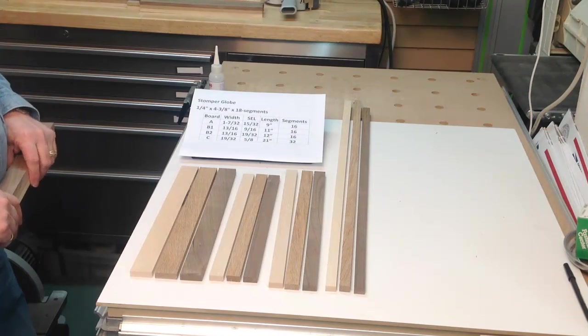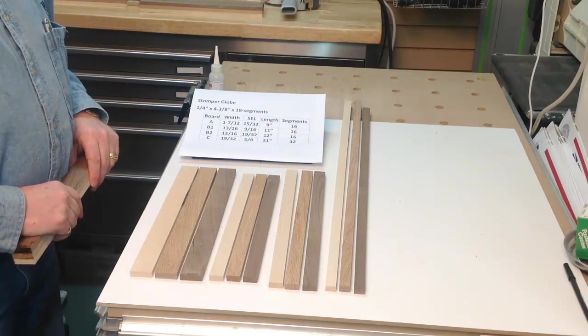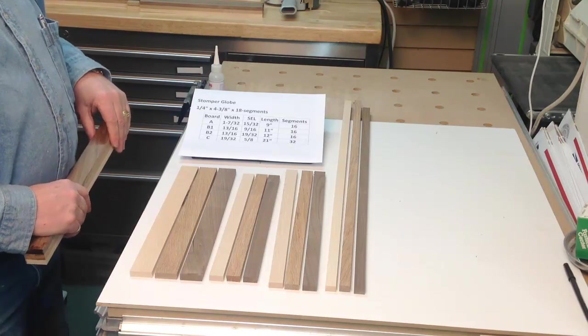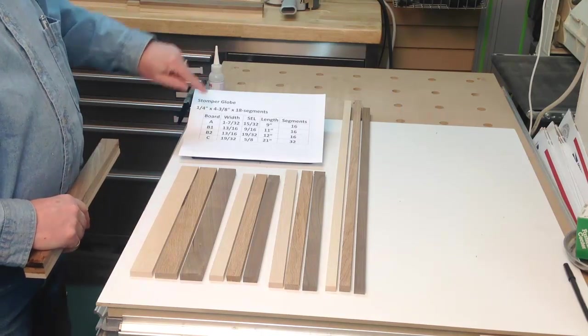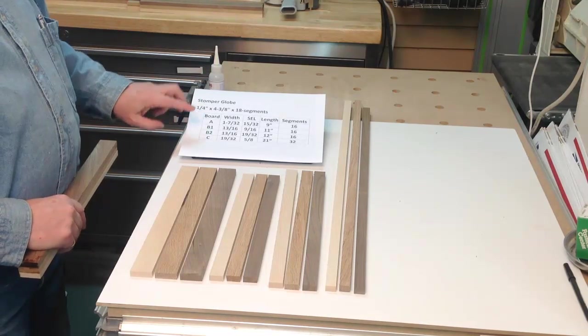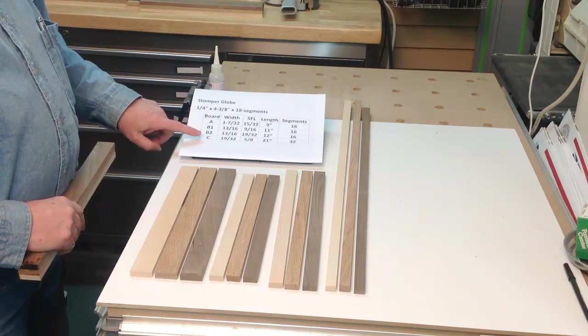So now that we've cut our pieces, if you recall from our designs tutorial, we ended up with having three different board widths. We have board A, we have board B, and we have board C.